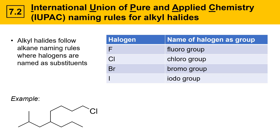Another option would be to start from this end and go 1, 2, 3, 4, 5, 6, 7, 8. So 8 is longer than 7, making it a better longest carbon chain. There's another way to get 8 going through the molecule: 1, 2, 3, 4, 5, 6, 7, 8. So there are two ways to get 8, and just like with alkane naming, if there's a tie, you want the chain that gives the most substituents — the one highlighted here in yellow, because it gives three substituents.